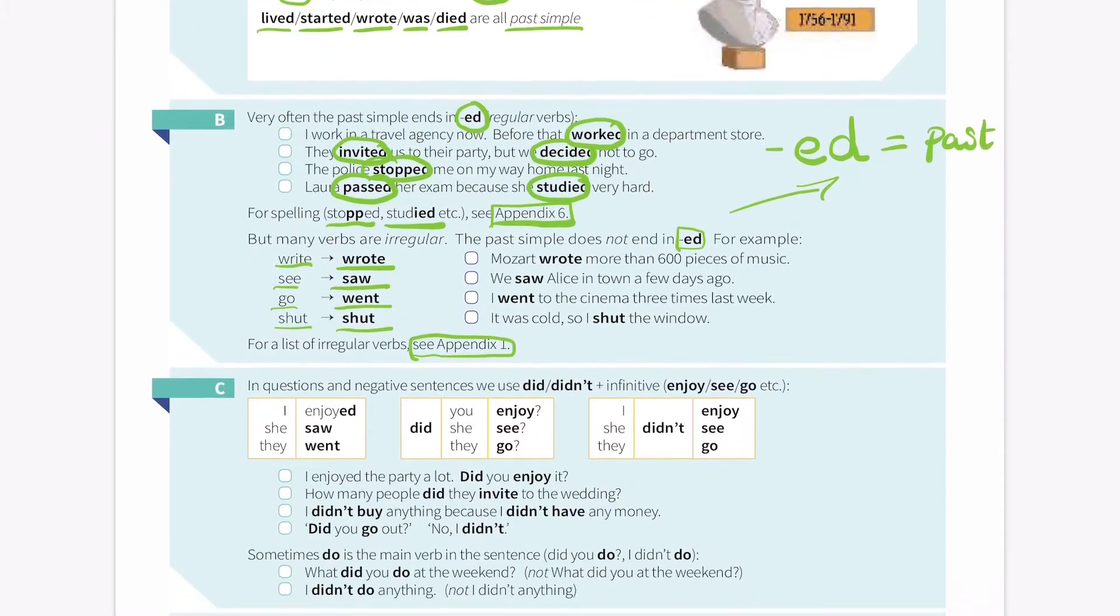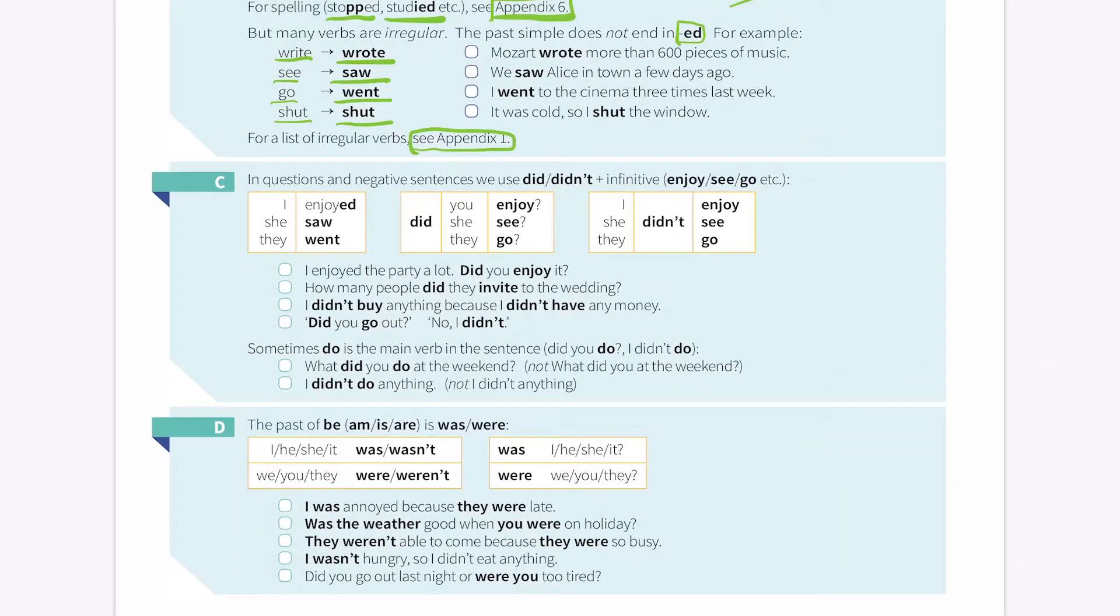Let's go on to C next. In questions and negative sentences, we use did and didn't plus an infinitive. Enjoy, see, go. So for I, you can say I enjoyed, I saw, I went, or she enjoyed, she saw, she went, or they enjoyed, they saw, they went. For did, you can do the same. Did you, did she, did they, but you have to add an infinitive on the end. Did you enjoy that? Did you see that? Did you go?